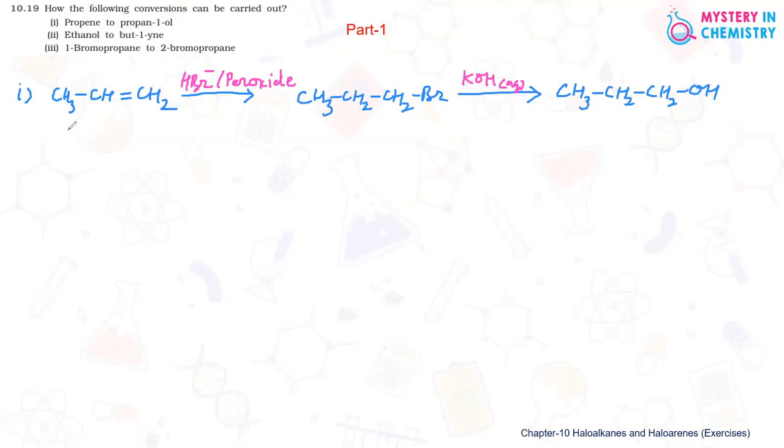This is starting from propene to 1-bromopropane. At one position, OH is required—that is where we require 1-bromopropane first. And after that, this Br can be replaced by OH group by aqueous KOH reaction. So we are getting propane-1-ol or we can say 1-propanol.